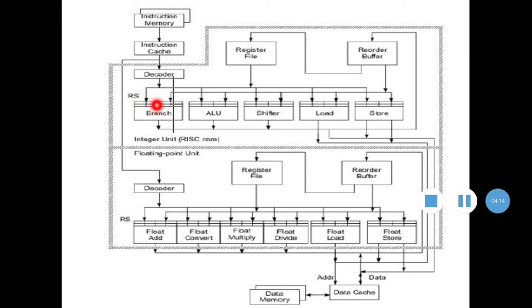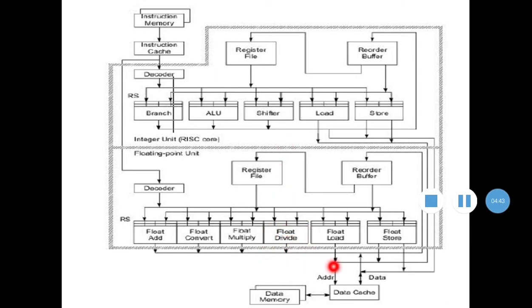Arithmetic instructions are sent to the ALU. Depending on the type of instruction, different hardware units are used. In the floating point unit there are units for float add, float convert, float multiply, divide, load, and store. There is also a register file, and when instructions need data, it is fetched from data memory and data cache.